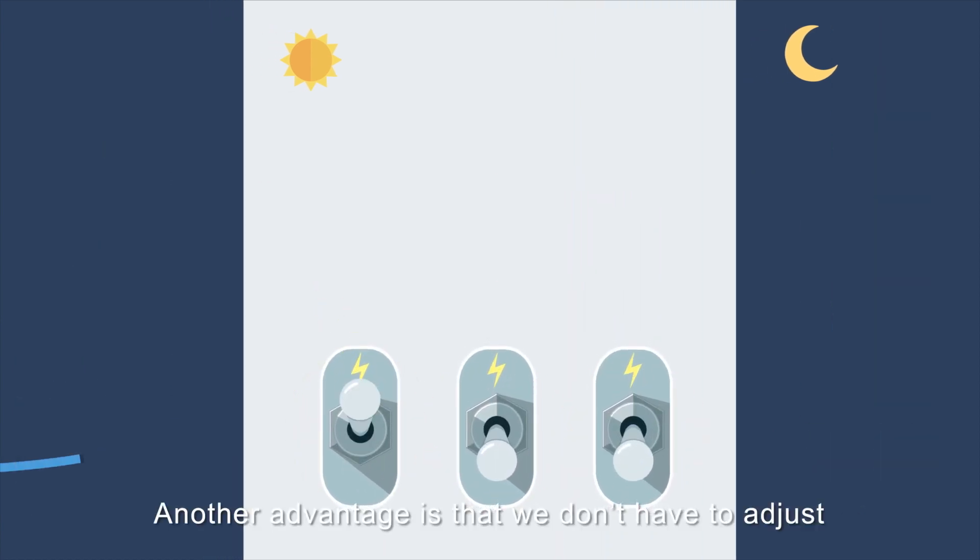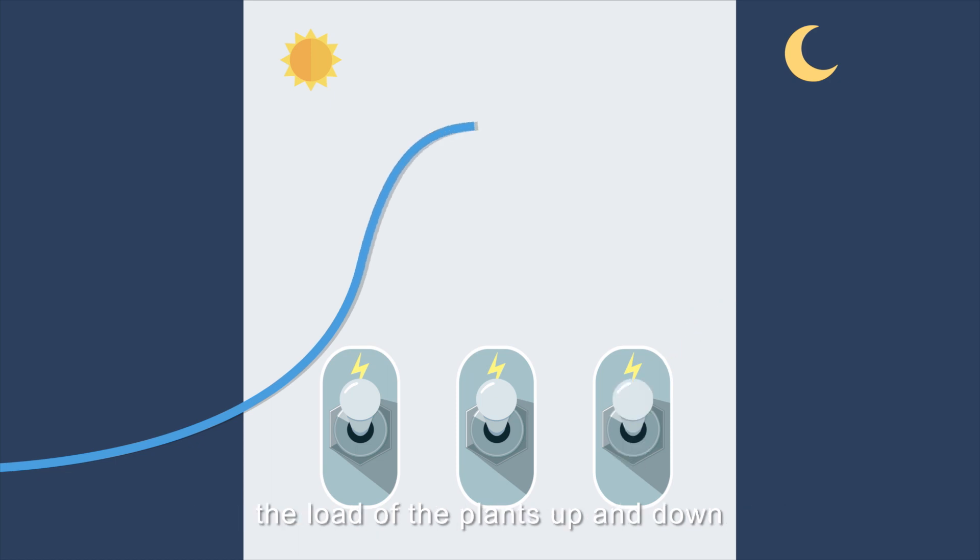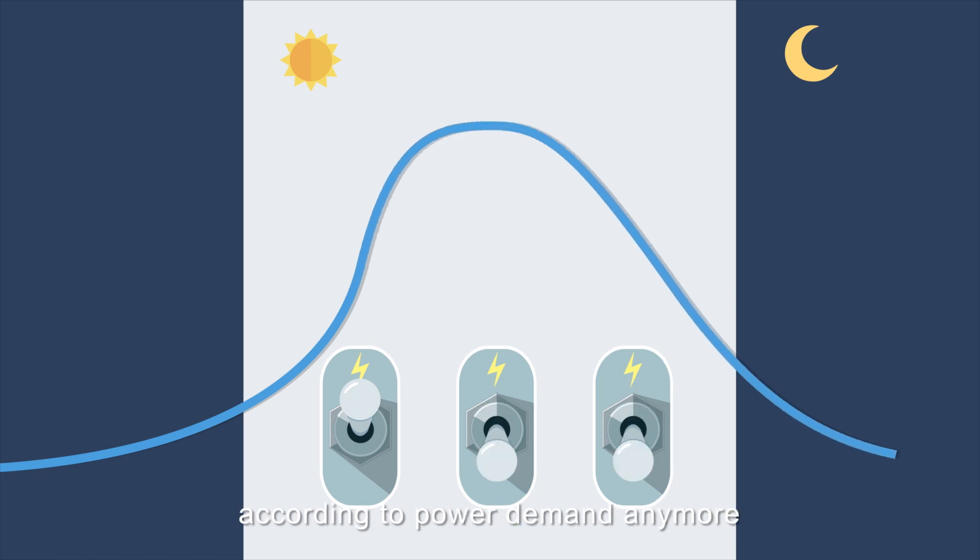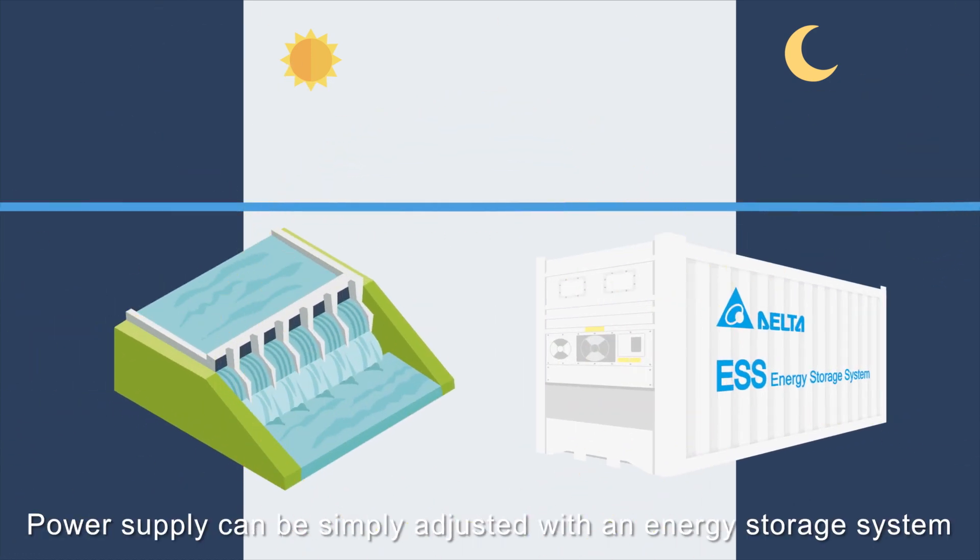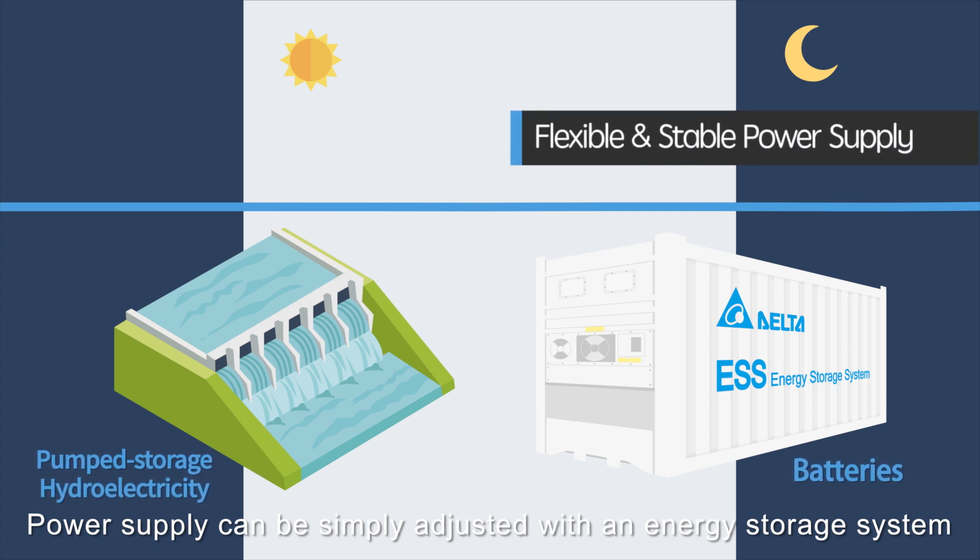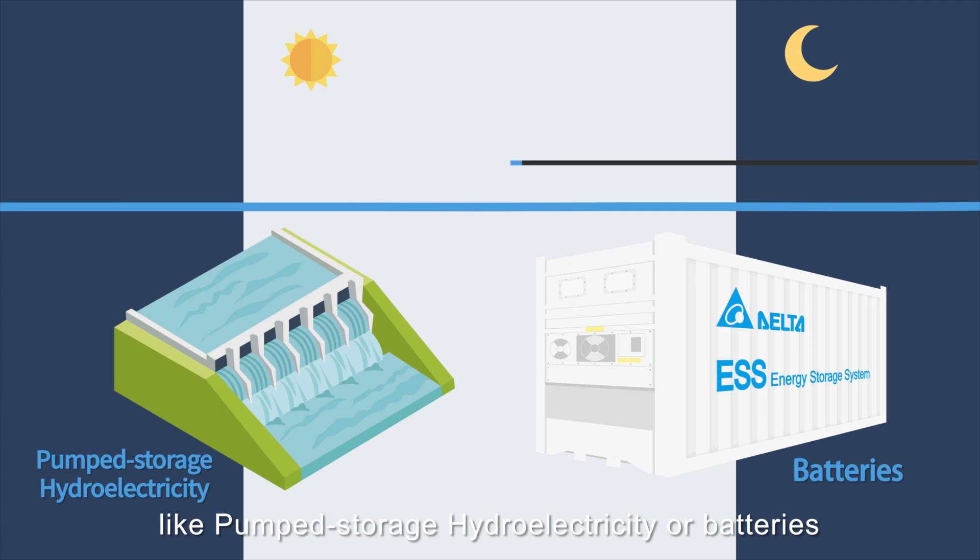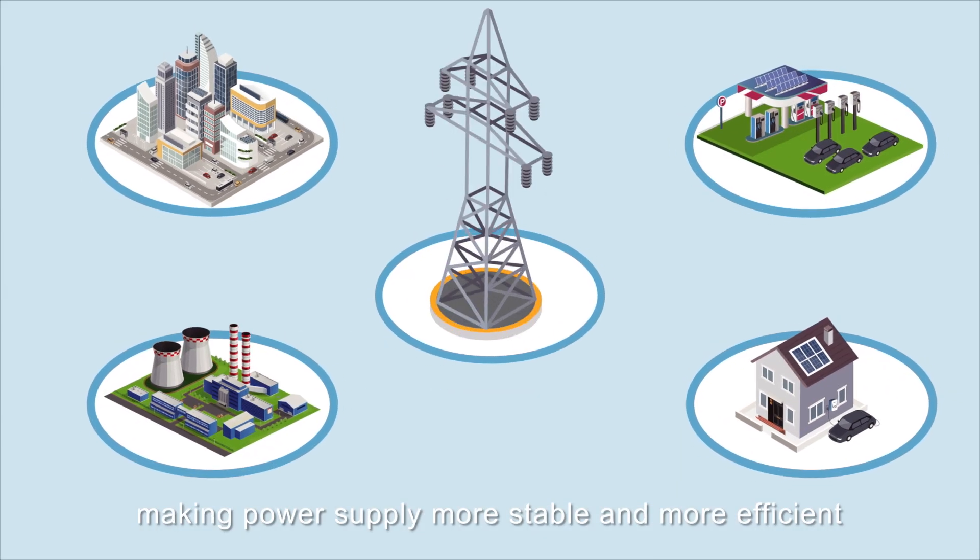Another advantage is that we don't have to adjust the load of the plants up and down according to power demand anymore. Power supply can be simply adjusted with an energy storage system, like pumped storage hydroelectricity or batteries, making power supply more stable and more efficient.